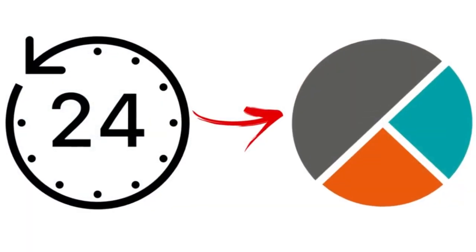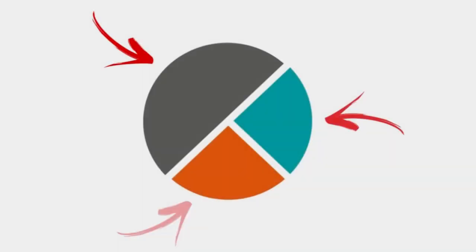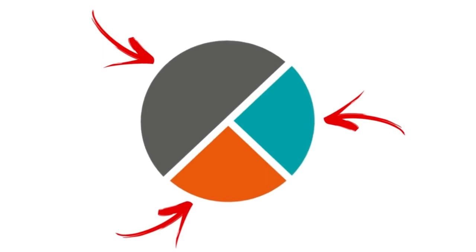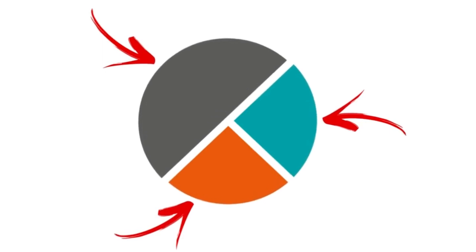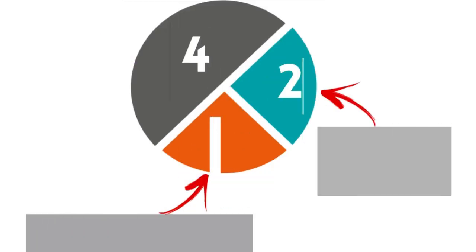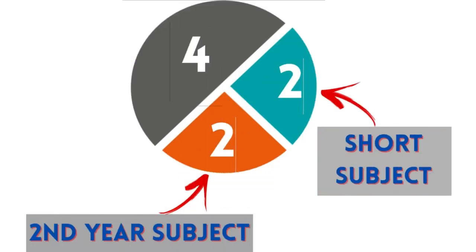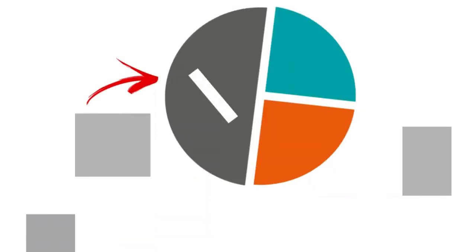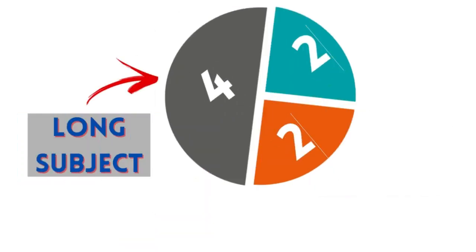Divide your day into three segments: one big segment and two smaller segments. If you are studying for eight hours, divide it into two segments of two hours and one segment of four hours. In these small segments, do a second-year subject and a short subject daily. In the big segment, do a big subject daily.